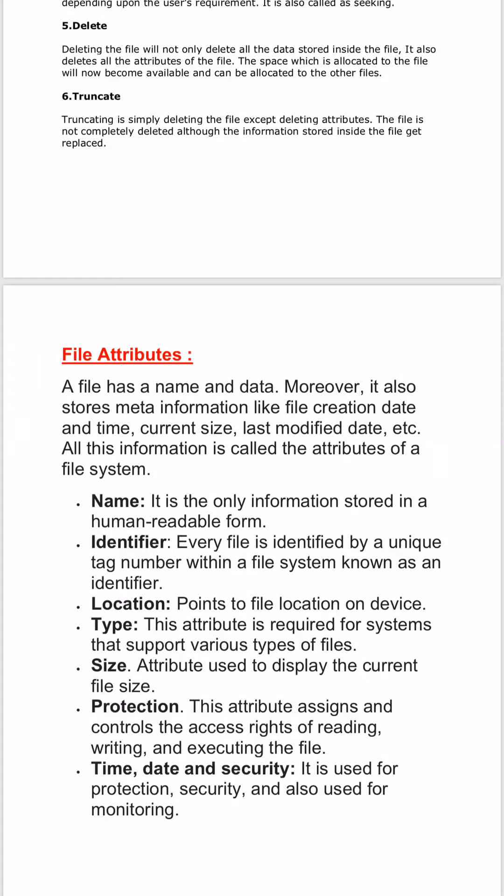The next attribute is size — the size attribute is used to display the current file size. The next one is protection — this attribute assigns and controls the access rights of reading, writing, and executing the file. Protection determines who can only read the file, who can only write the file, and who can only execute the file. The next one is time, date and security — it is used for protecting security and also used for monitoring. Every file has a proper time and date recording when it was created or modified.